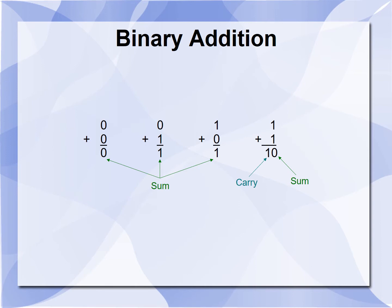Binary addition of two binary numbers: 0 plus 0 is 0; 0 plus 1 is 1; 1 plus 1 is 10, where 0 is the sum and 1 is the carry.